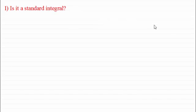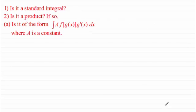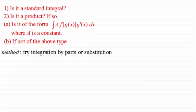And if not, I then went on to show you that the second check was: is it a product? And if so, did it have this form? And if it did, we could do this type by inspection or substitution. But what happens though, if it is a product and it doesn't have this form? Well, that's the purpose of this particular tutorial. If it doesn't have this form, then the method I would try is either integration by parts or substitution.